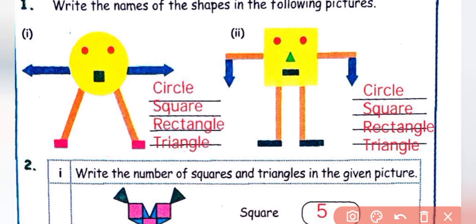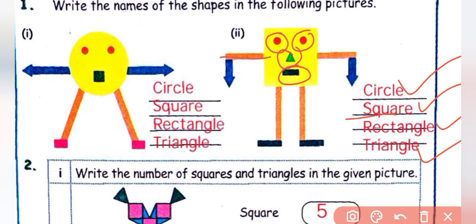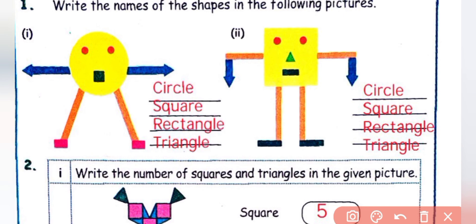Next shape — rectangle. Then triangle. So the shapes in the first picture are: circle, square, rectangle, triangle. In the second picture, the shapes present are: square, circle, triangle, rectangle. So in the picture there are 4 shapes: circle, square, rectangle, and triangle.